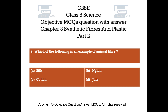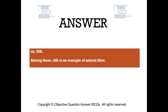Question number 2. Which of the following is an example of animal fiber? Option A - silk, Option B - nylon, Option C - cotton, Option D - jute. The right answer is Option A, silk. Among these, silk is an example of animal fiber.